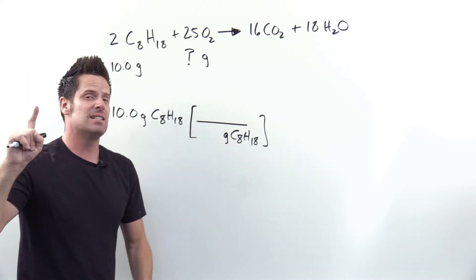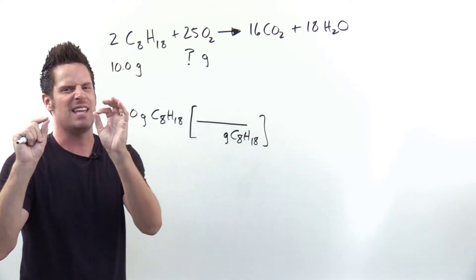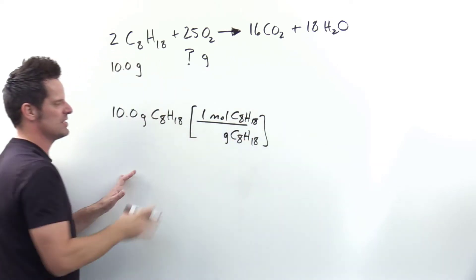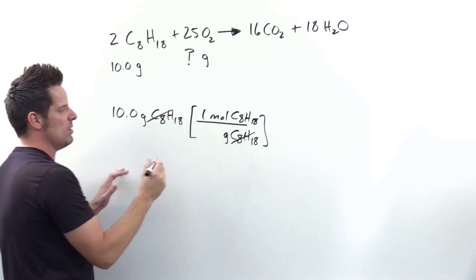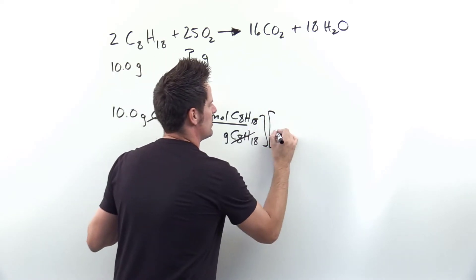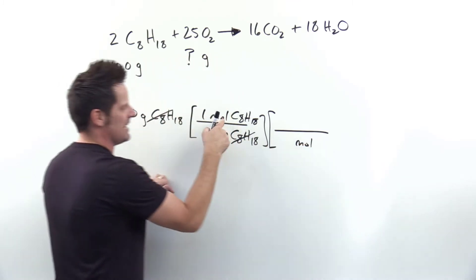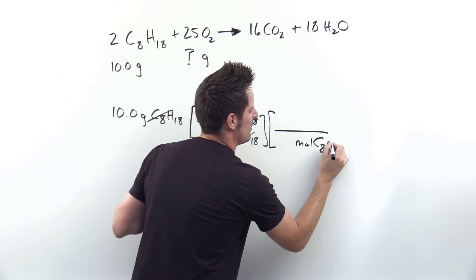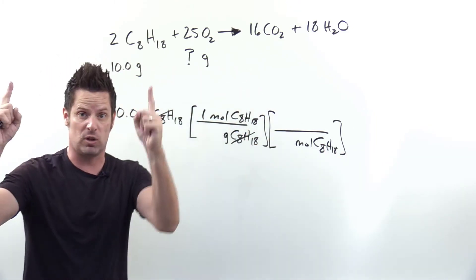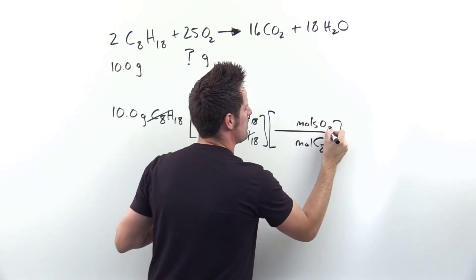Can grams of octane and moles of octane touch? Yes — grams and moles of the same substance can touch. So I put one mole of octane in the numerator. These units cancel, and I'm getting closer to grams of O2. I lay down another set of parentheses, put moles of octane in the denominator, and ask: can moles of octane directly relate to moles of O2? Yes — moles and moles can touch — so I put moles of O2 in the numerator.